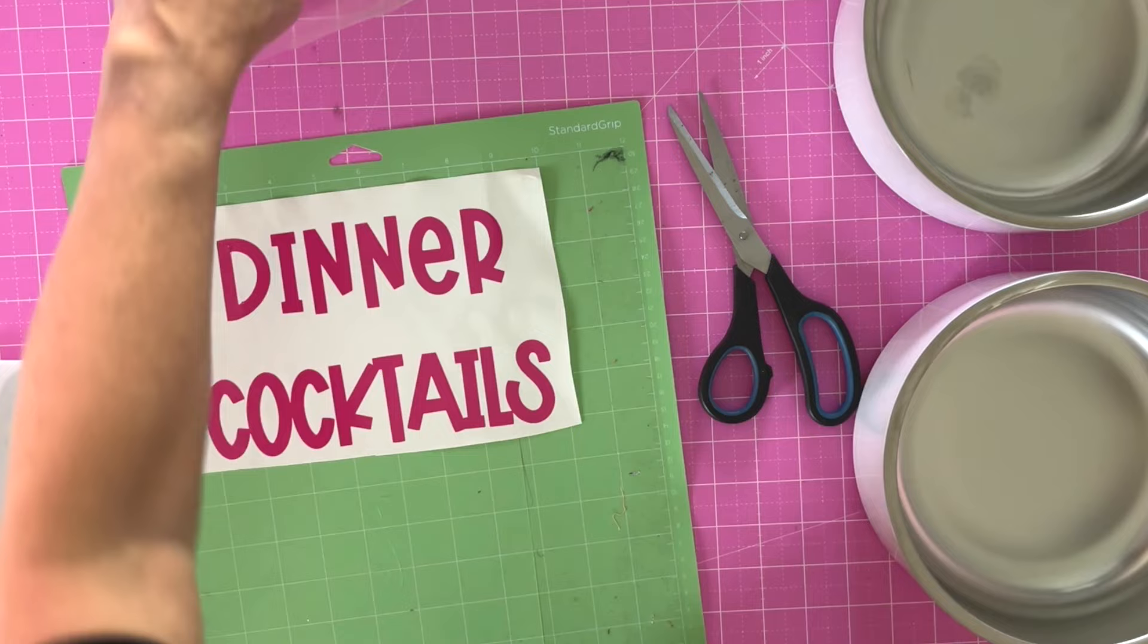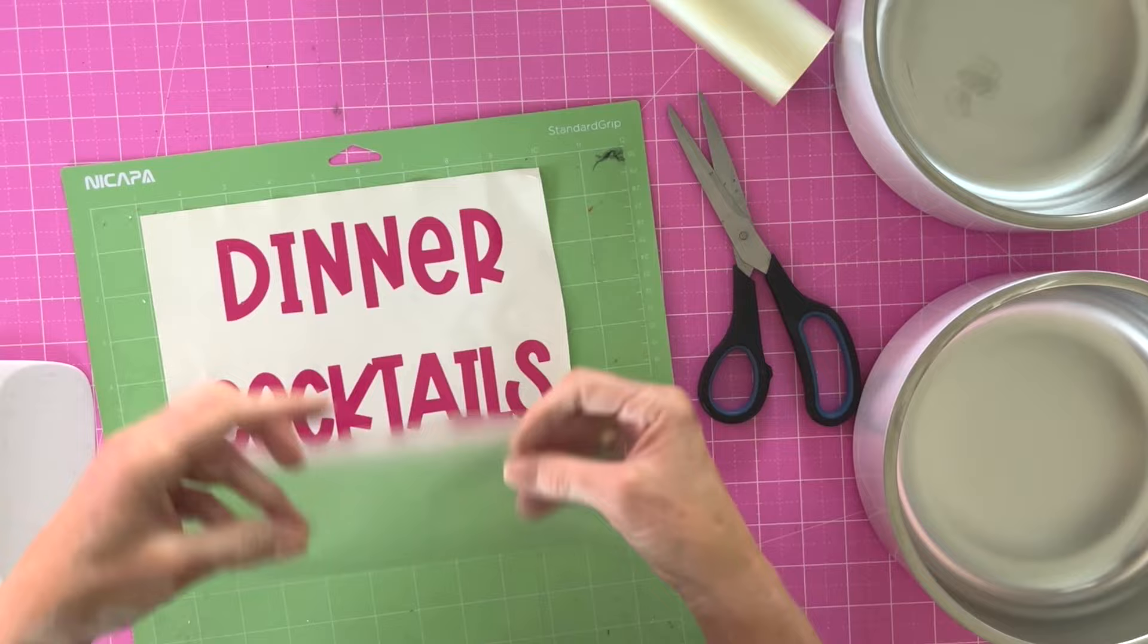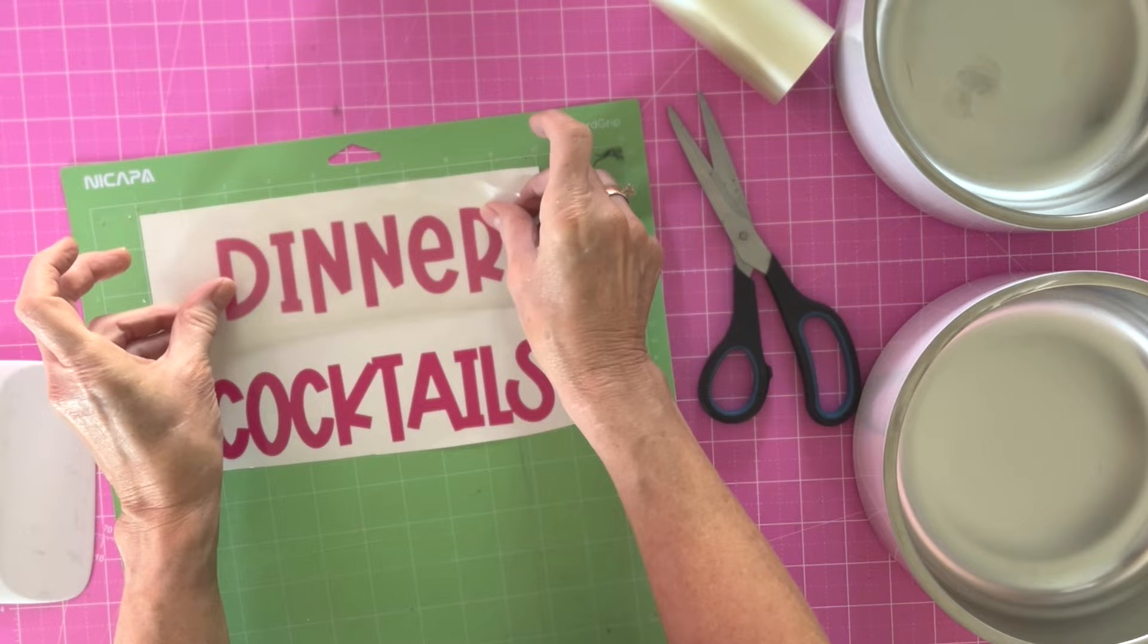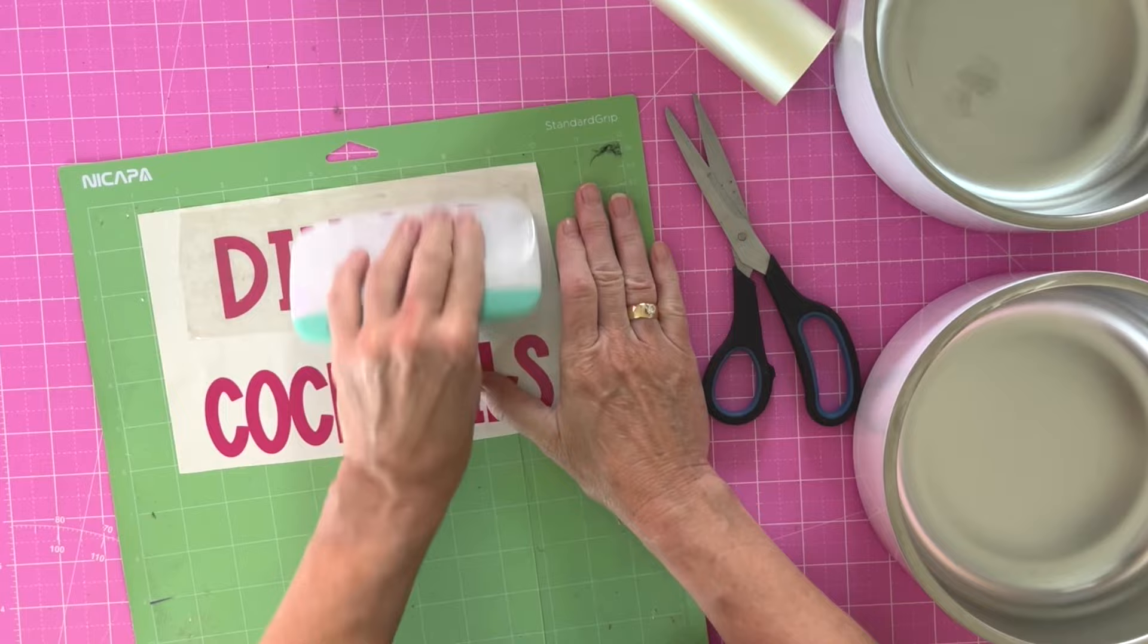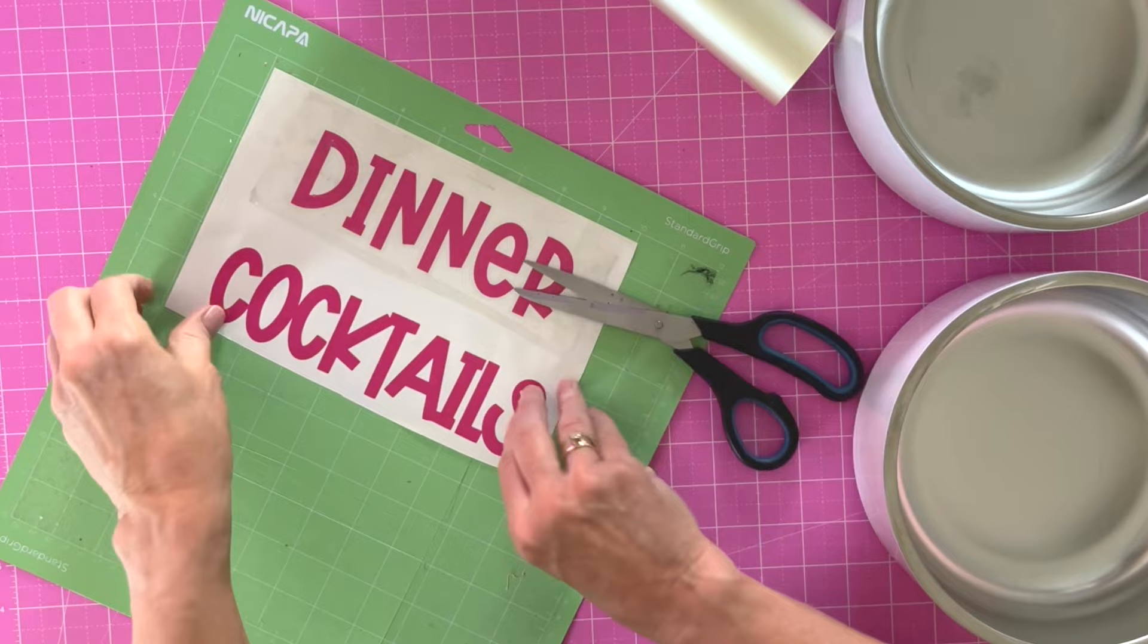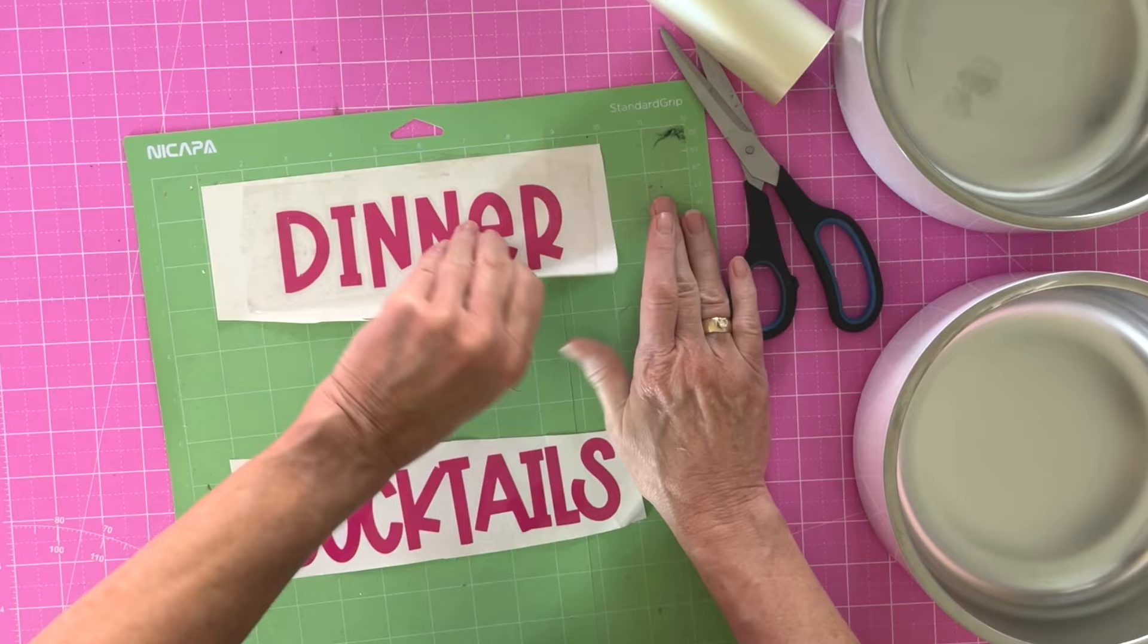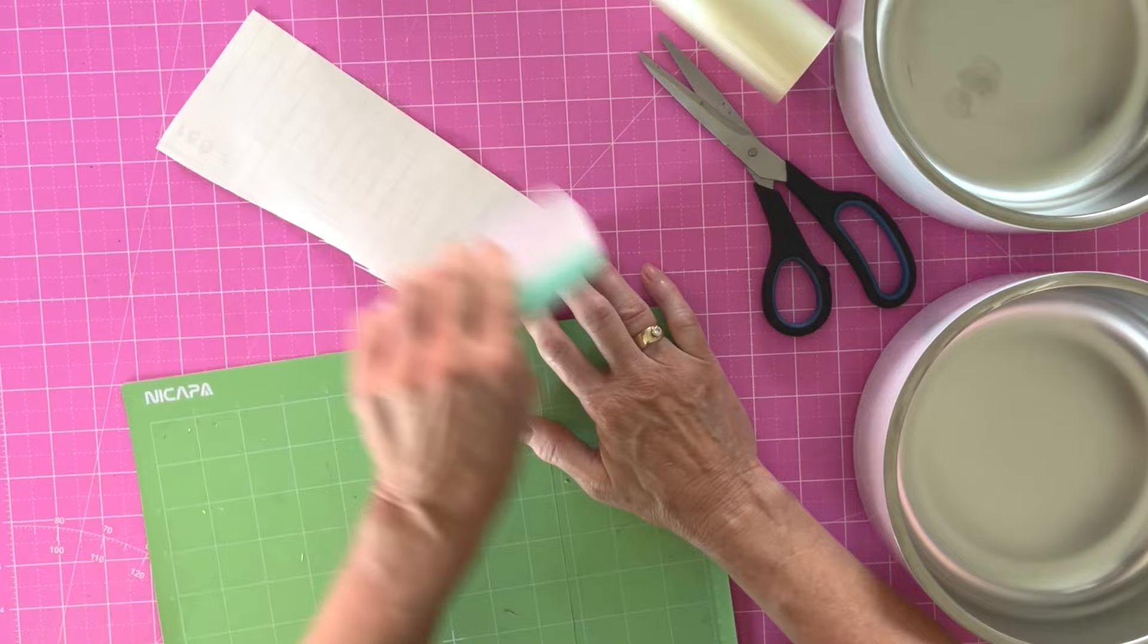So I have my transfer tape. This is the one I like. I will link it in the description below. I'm just going to take my transfer tape. It's got sticky on one side. It's clear on this side, one side's sticky, one side's not. I'm just going to place that right on top. And I am going to rub it with my scraper really well. I'm going to take this half and separate it. Now I can turn this over. And again, I'm going to bray it in the back.